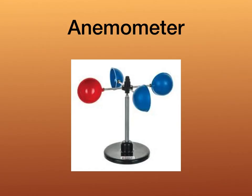This next weather instrument is called an anemometer. Go ahead and try to say that one time — anemometer. This weather tool measures how fast the wind is blowing, or the speed that the wind is blowing at. It is easy to mix up a wind vane and an anemometer. The key thing to remember is that a wind vane has directions on it — north, south, east, and west — while the anemometer does not have directions on it. It measures the speed at which the wind is blowing, not the direction.